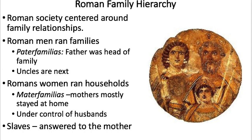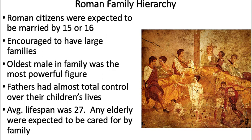A typical family in Rome — you were expected to be married by 15 or 16. Zoinks. But when you consider the average lifespan was about 27, that's pretty crazy. Especially women had a very rough life — death in childbirth and death for children was very common. That's why they were encouraged to have such large families, because they often would have many children who would not live past their first year. It was a tough time to be alive.